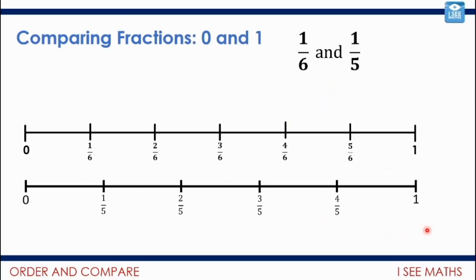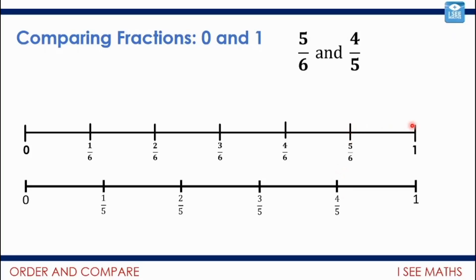Now I want to show you a few different ways to compare fractions. My first technique: compare the fractions to zero and to one. If I'm comparing a sixth and a fifth, I can see a sixth is a smaller distance from zero than a fifth, so a fifth is larger. But if comparing five sixths and four fifths — they're far from zero — it might be easier to think how far they are from one. Five sixths is a sixth less than one, whereas four fifths is a fifth less than one. A fifth is a bigger jump, so the larger fraction is five sixths.